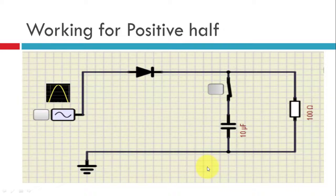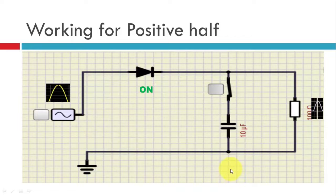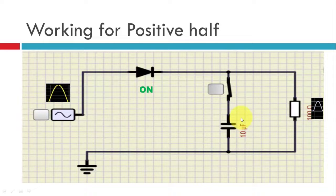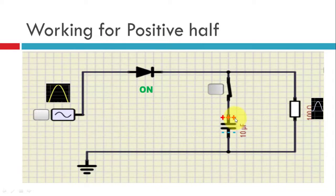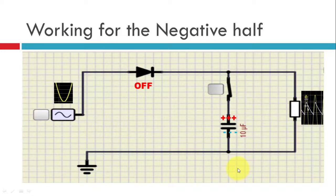During the positive half of the AC, this diode is on because the diode is now in forward bias. So it forward biases — the diode conducts — and as you can see we are getting the output here. Because this output is also in parallel with this capacitor, this capacitor also gets the output and the capacitor gets charged, as you can see from the plus and minus signs — this capacitor gets charged fully.